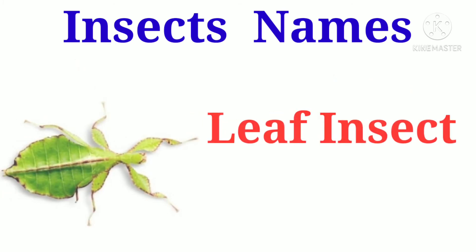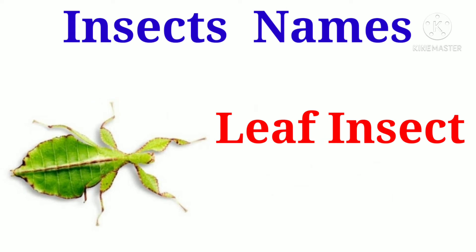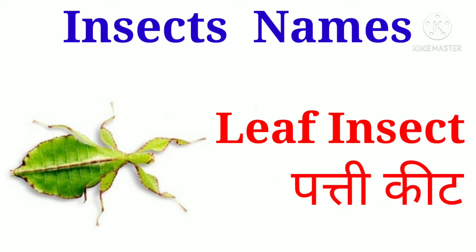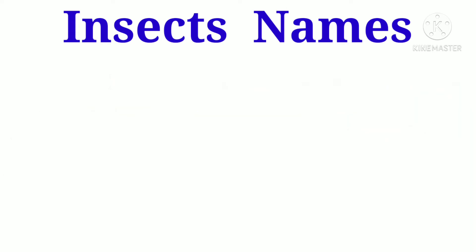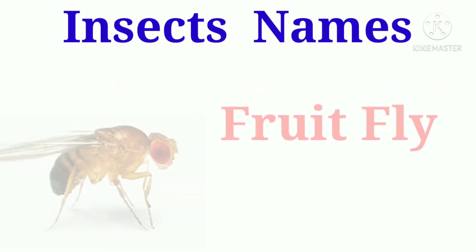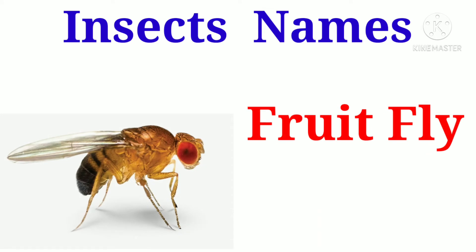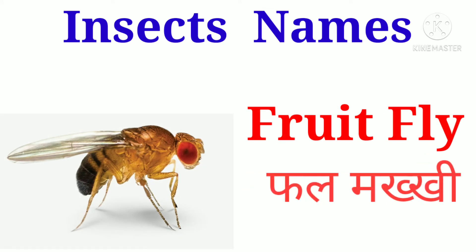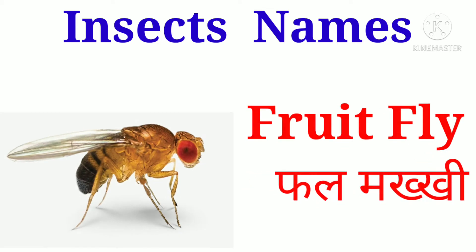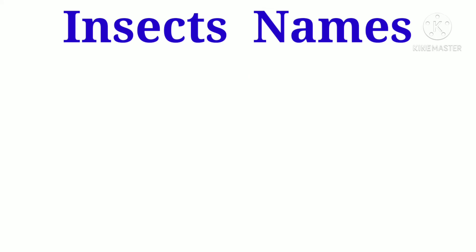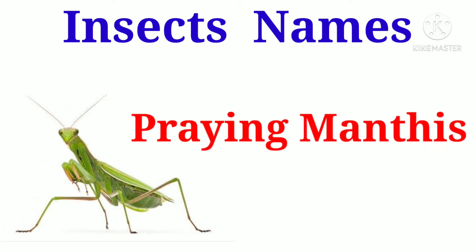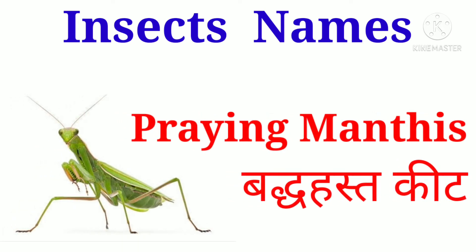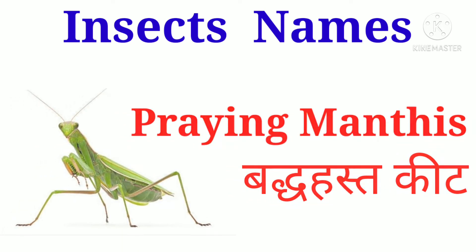Leaf insect. Leaf insect ko Hindi me hum patti kit kehte hain. Fruit fly. Fruit fly ko Hindi me hum fulmakkhi kehte hain. Praying mantis. Praying mantis ko Hindi me hum baddhasth kit kehte hain.